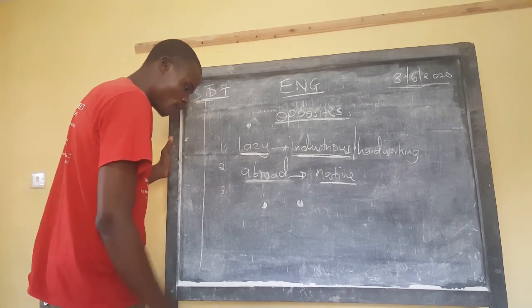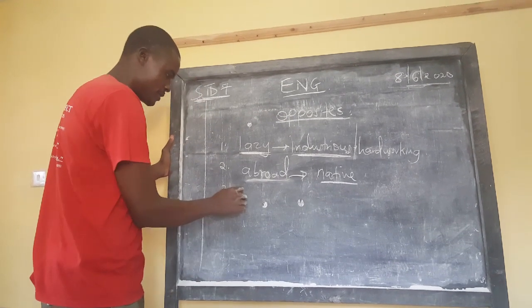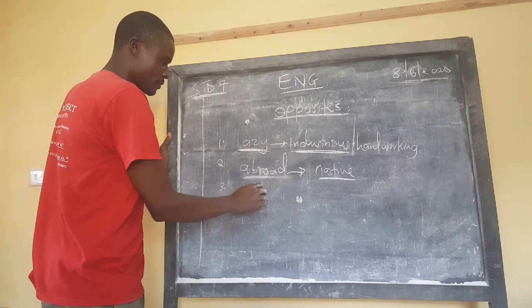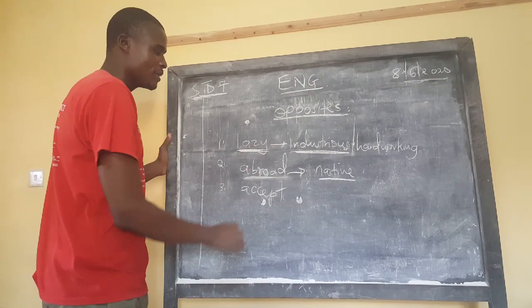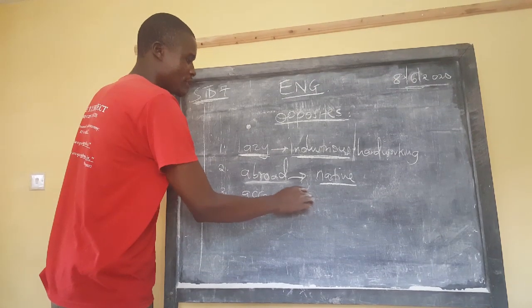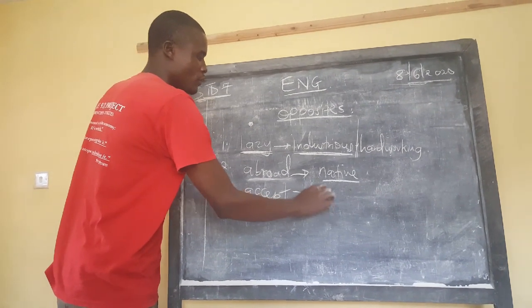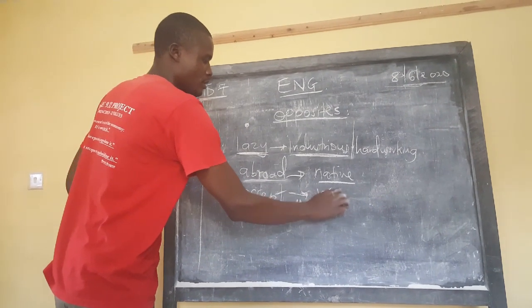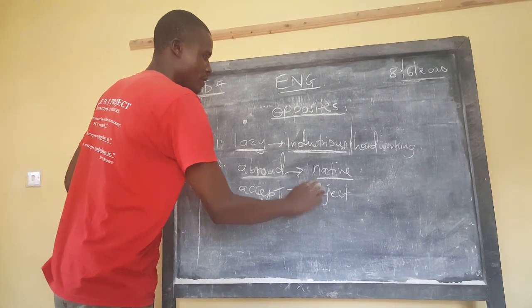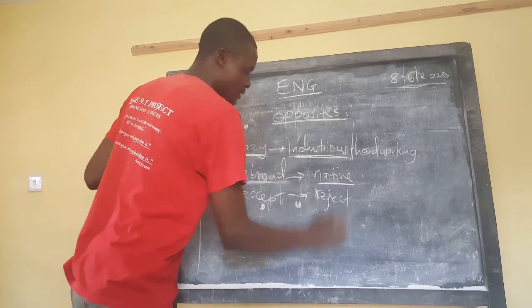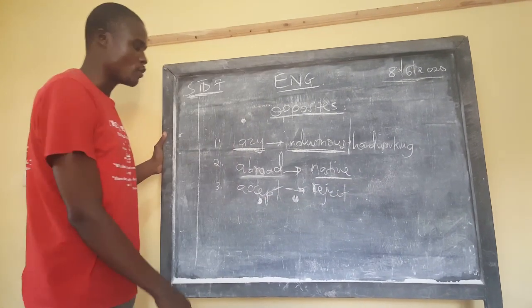Number three, we have the word 'accept'. When we don't accept something, it's very simple — we 'reject'. So reject is the exact opposite of the word accept.